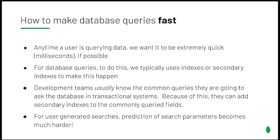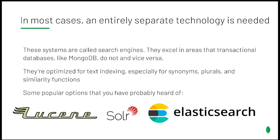In a typical database, we use indexes to point us to specific data points, and the more that our developers can understand about the application's query patterns, the better we can optimize our indexes to return precise results quickly. The variability and inherent unpredictable nature of what a user is going to type into your search box is precisely why purpose-built search technologies were designed. These purpose-built search engines optimize for the nuances and variability of human language and factor for typos, synonyms, and correlations based on ranking and sorting mechanisms, as well as various dictionaries that developers can deploy and refine as needed.